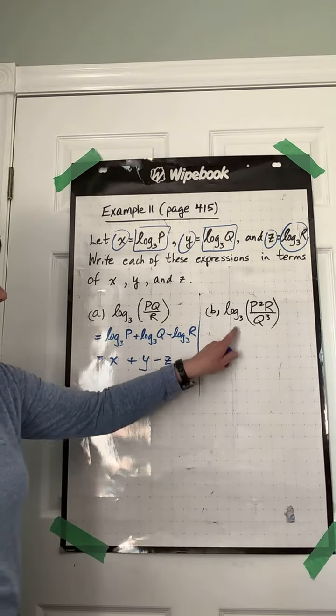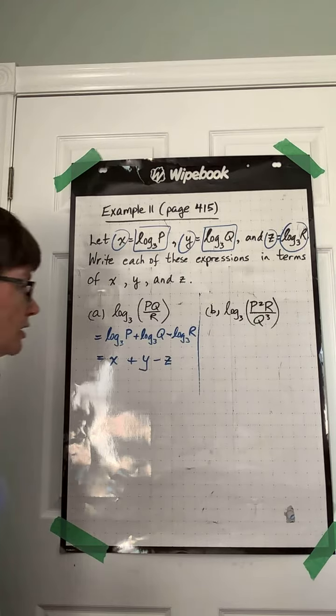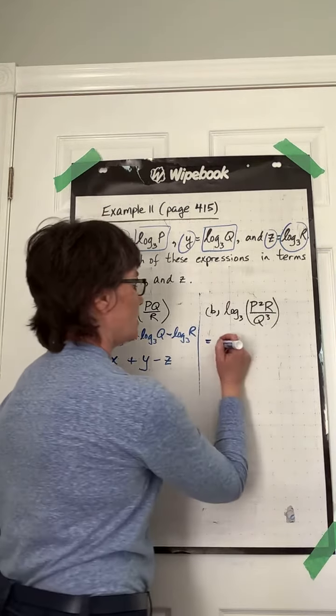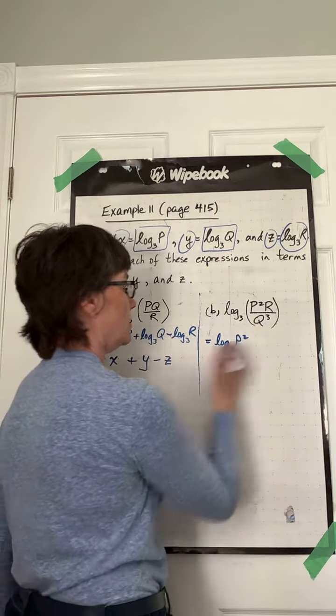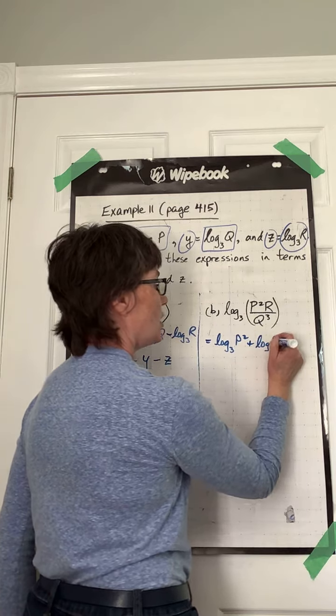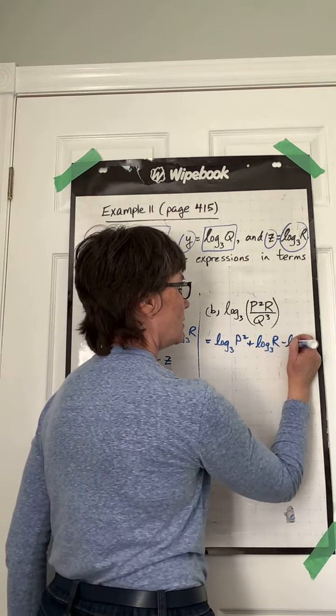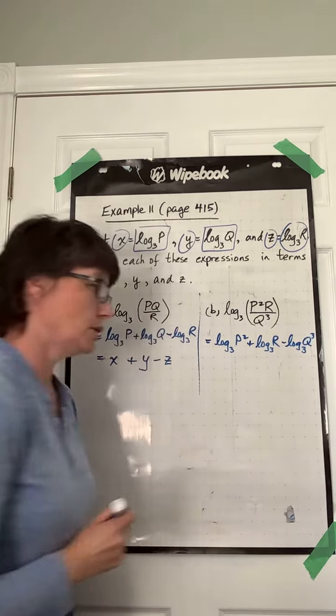Second one. Log base 3 of p squared r divided by q cubed. So separating that out, log base 3 of p squared plus log base 3 of r subtract log base 3 of q cubed.